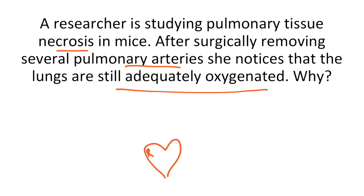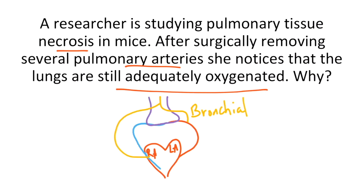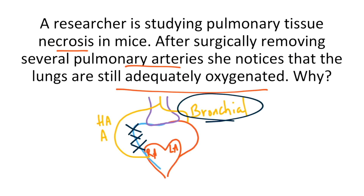Let's quickly redraw the illustration. We have the right atrium and left atrium, the pulmonary artery and pulmonary vein, the alveoli, the bronchial artery, and the hemiazygous and azygous veins. Recall that the pulmonary arteries supply blood to the alveoli and are the primary blood supply to the lung parenchyma. However, the bronchial artery also supplies oxygen to the bronchi and offers collateral circulation to the lung parenchyma. This means even if many of the pulmonary arteries are surgically removed, the bronchial blood supply could still maintain adequate oxygenation of the lung tissue and would prevent tissue necrosis.